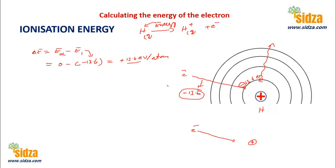When you ionize the atom, you take the electron from the first shell back to infinite position. You need exactly the same amount of energy—13.6—but with a positive sign, because the process is endothermic. You must supply energy to take the electron away from the nucleus.